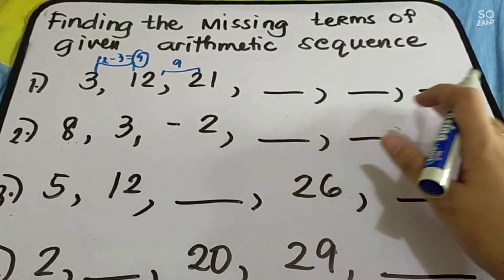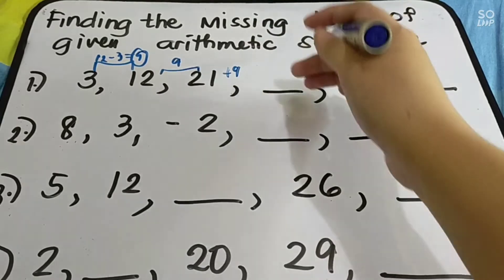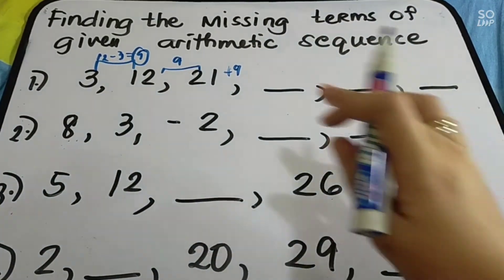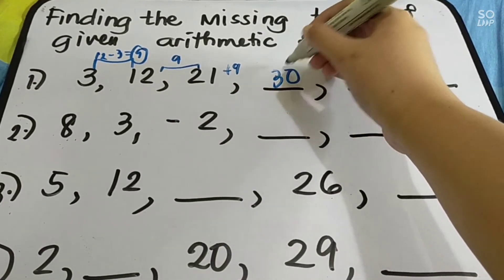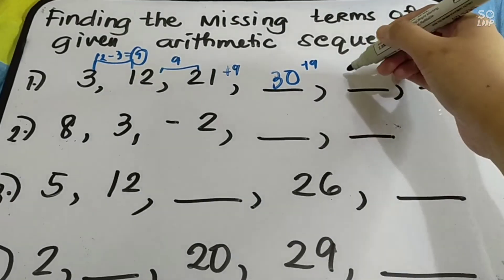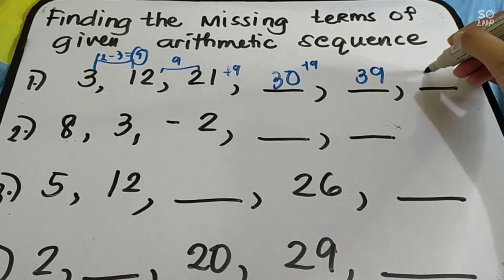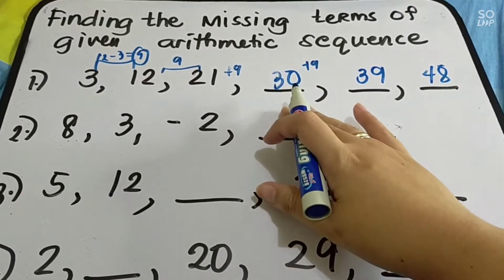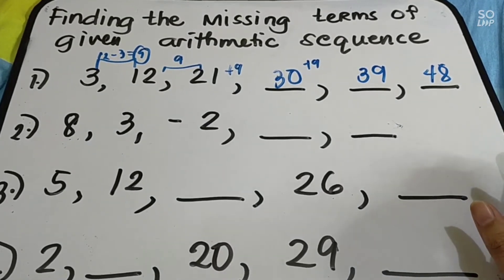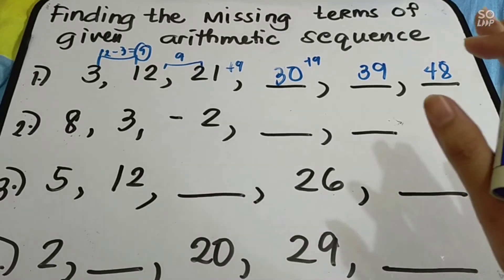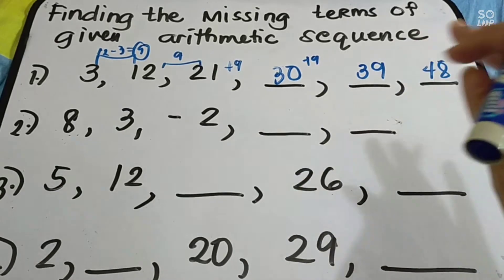Now, how do you find the next 3 terms? You just add 9 to the previous term. So 21 plus 9 = 30; 30 plus 9 = 39; 39 plus 9 = 48. You now have your missing terms. It's that simple — just find the common difference, then keep adding it to get the missing terms.